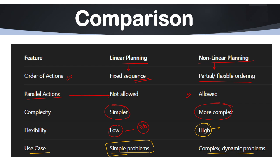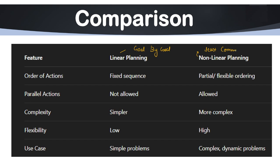Other than these we have some other comparisons. In case of linear planning it is generally a goal by goal method. And if we talk about non-linear planning it is basically a least commitment approach. If we talk about adaptability in non-linear planning, it is good in dynamic and complex environments.